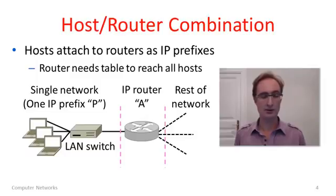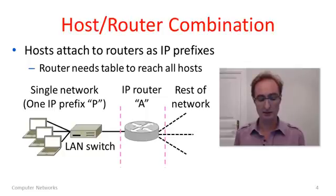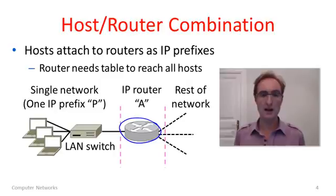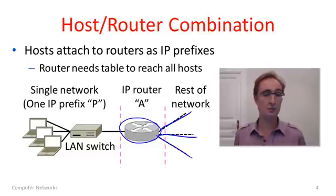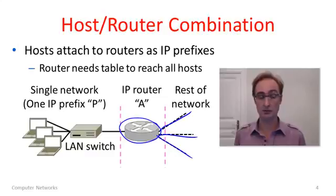Okay, so let's try and put these pieces together. Here is how hosts and routers would be combined in a network. The networks I've drawn have pictures here like a router — here's router A — and that router has links that connect it to the rest of the network. The dots represent all of the different routers which are doing the routing.